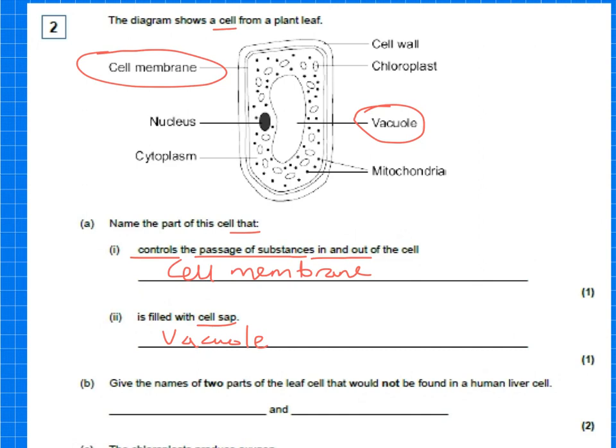And then the next question, it says, give the names of two parts of the leaf cell that would not be found in a human liver cell. Notice that they are in bold. So that's for a reason. So they only want the two parts that are not found. And they say in a human liver cell. Well, human liver cell is an animal cell.